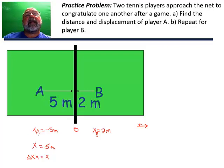Okay, I identified player A's position at the beginning as negative five meters. And player A, the change in position of player A is from x final minus x initial. And that would be equal to x final is zero minus his initial location, which is negative five. Very important that you keep track of your signs.